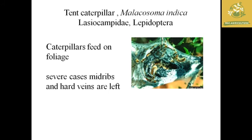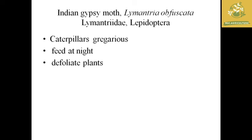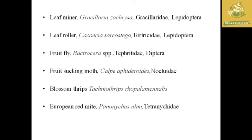The next pest is tent caterpillar, which gets its name because it folds many leaves and creates its own tent-like structure. The caterpillar feeds on foliage and in severe cases even eats the midribs and hard veins. Another important pest is the Indian gypsy moth, where the caterpillar is a gregarious feeder and mainly feeds at night, defoliating the whole plant. It belongs to the family Lymantriidae and order Lepidoptera.